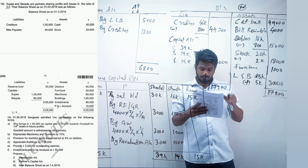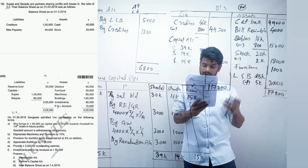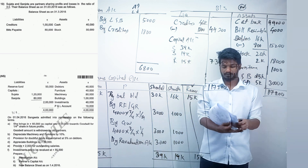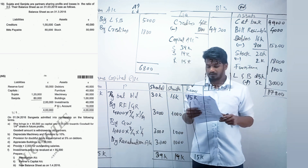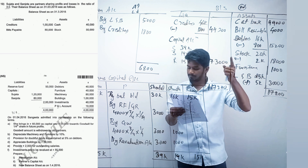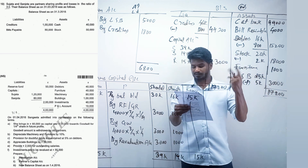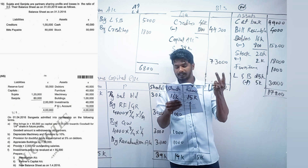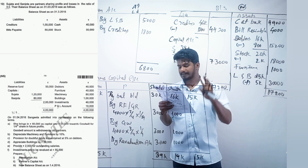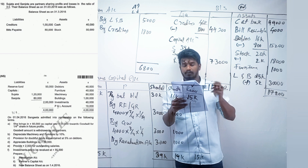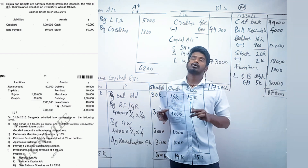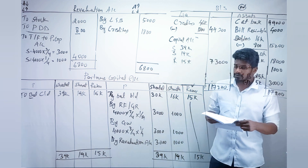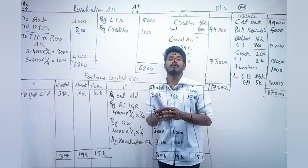They have given that Sudhartha and Sanjota are partners sharing profit and losses in the ratio of 3:2. They have given a normal balance sheet. When Sangeeta got admitted on 1st April 2016, she brings capital and goodwill. Point B is to depreciate machinery and furniture, point C is provision for doubtful debts. We need to prepare the revaluation account, partners capital account, and balance sheet. We are going to discuss the questions, not solve them in full.